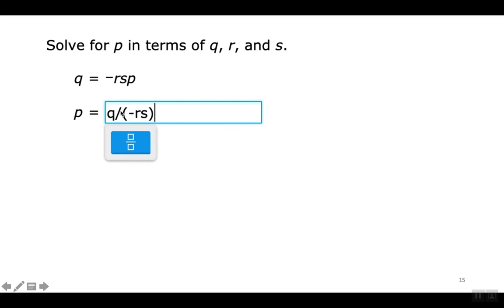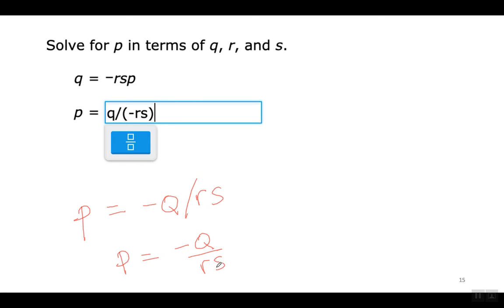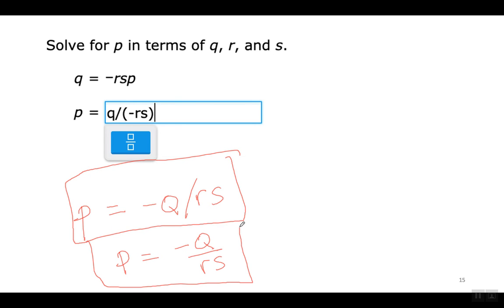Aquí estaba chequeando si IXL acepta esta respuesta, y sí lo acepta. Pero creo que lo hice lucir demasiado complicado. La manera más fácil de escribir la respuesta sería así — negative Q over RS — o así usando el botón azul. No quise incluir esta foto; era yo chequeando para ver si IXL acepta esa respuesta también, y sí lo aceptó.